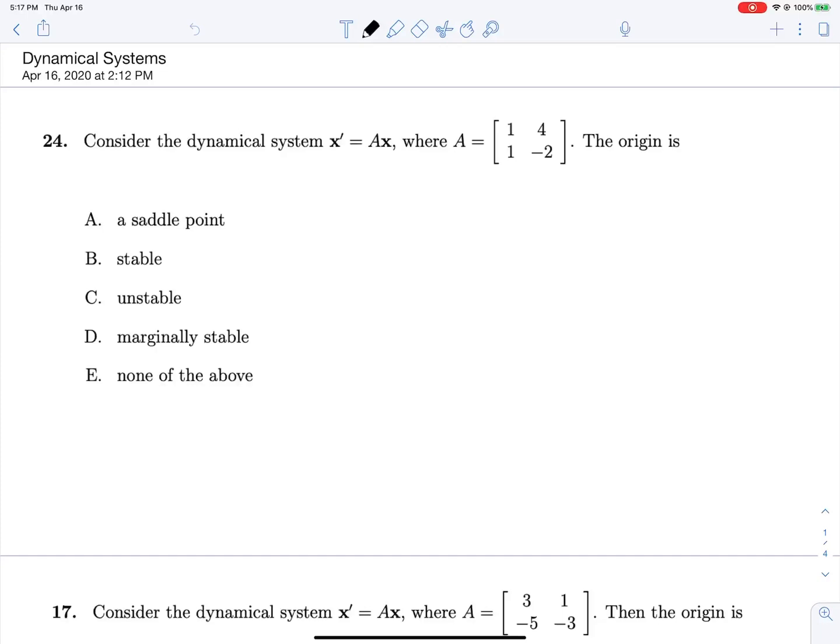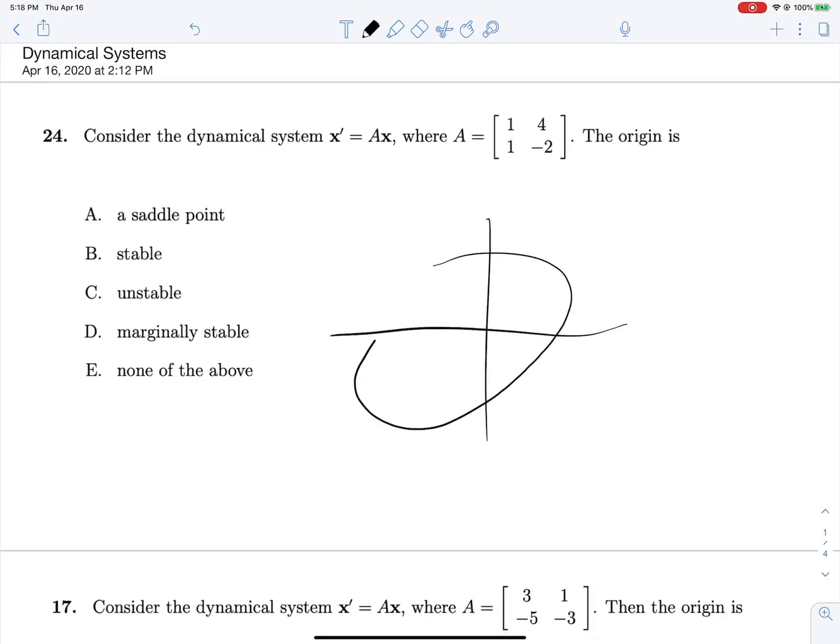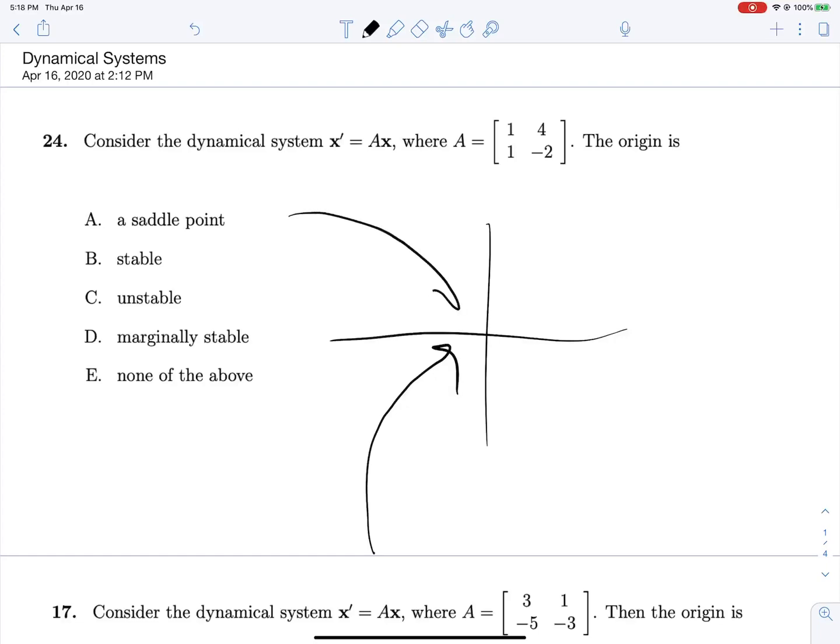So just to go over what we're looking for, we're trying to figure out what signs and types of eigenvalues we're dealing with. If we have purely imaginary eigenvalues, our system is going to spiral in an ellipse around the origin. If we have complex eigenvalues with a positive real part, we will get spirals away from the origin. If we have complex eigenvalues with a negative real part, we will spiral into the origin.